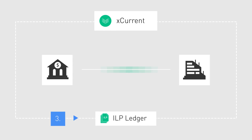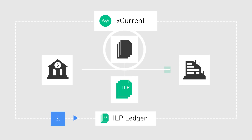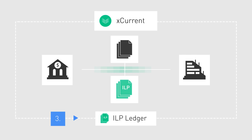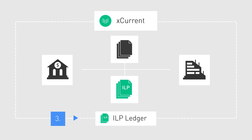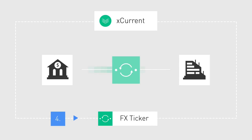The ILP ledger is used as a sub-ledger, which can be incorporated into financial institutions' current ledger. The ILP ledger is used to track credits, debits, and liquidity across transacting parties. Funds are settled atomically, meaning that they are settled instantly or not at all.